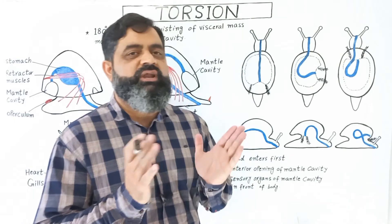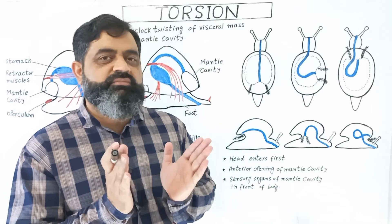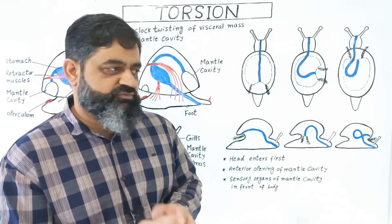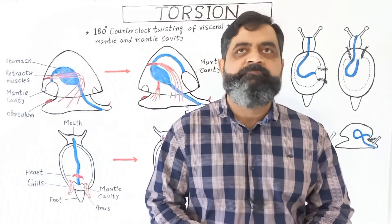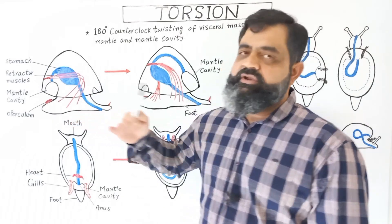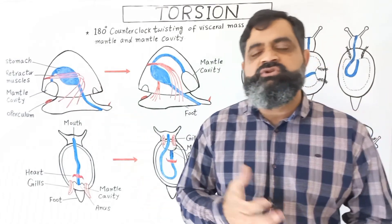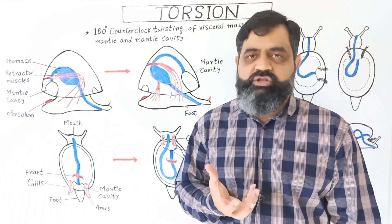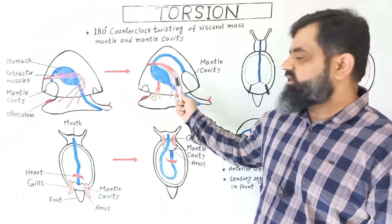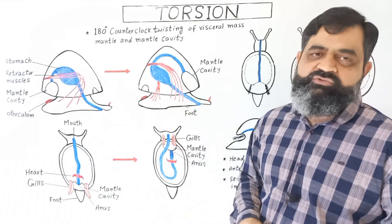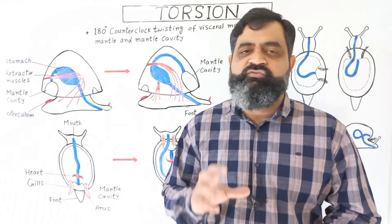Now let's discuss why torsion takes place. There are many speculations and advantages to discuss. The first advantage of torsion is that the head enters the shell first. Before torsion, when the animal retreats inside the shell, the posterior side enters first and the anterior side later — but the head is a very important part of the body and should be protected first. After torsion, the head will enter first and the tail will enter the shell later, closed by the operculum. This provides much more protection to the animal.